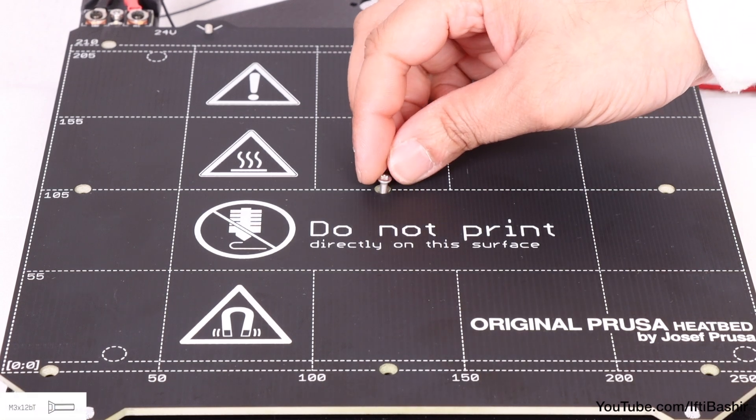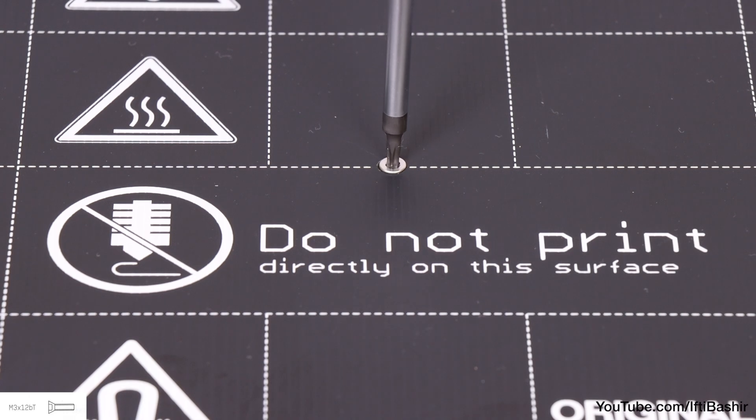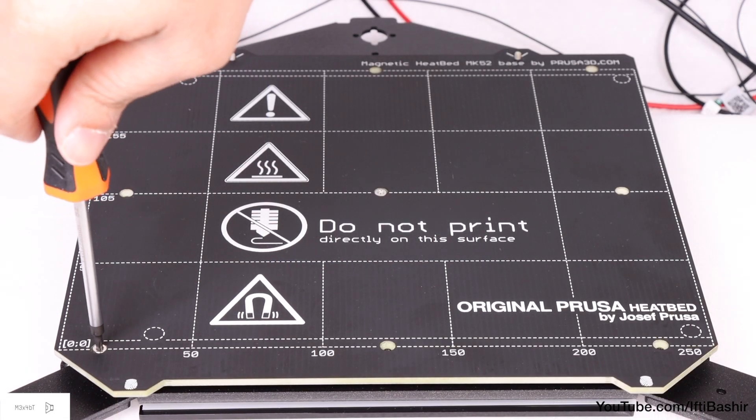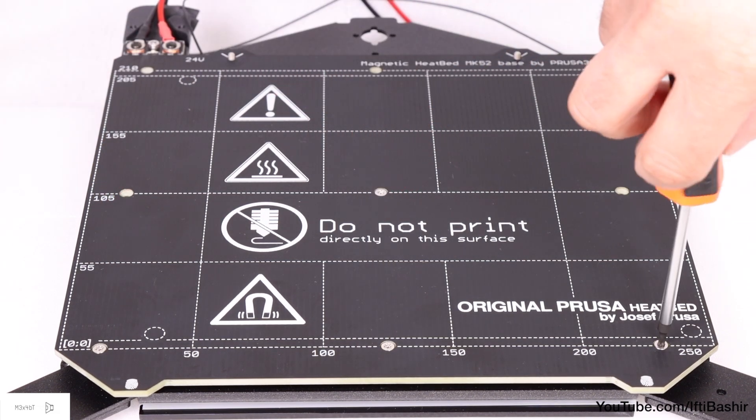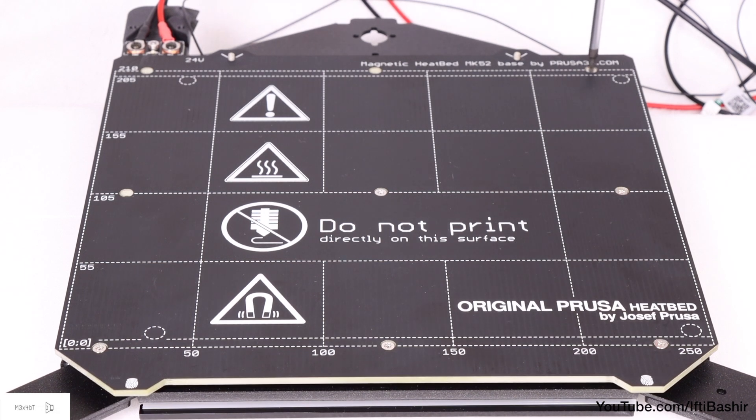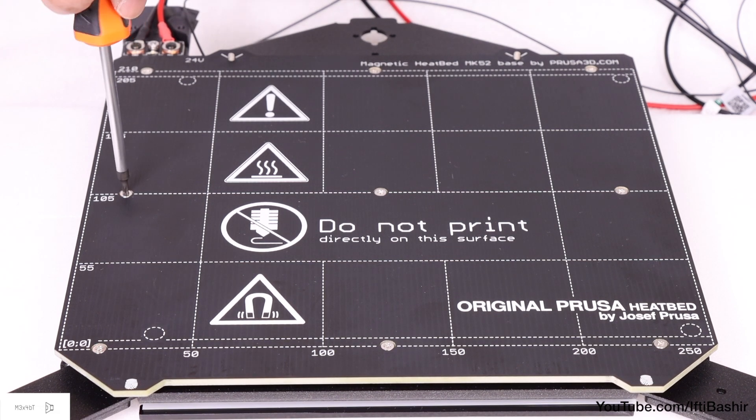With that confirmed, locate an M3 by 12 screw, bearing in mind we're using the flathead screws for this step, and insert into the center, and secure to the carriage. Do not over tighten just yet, only enough so that the screw bites into the thread, as we want to go around and place another 8 M3 by 4 flathead screws all the way around the heat bed. We're just biting the threads at this stage, we're not actually tightening anything down at all.